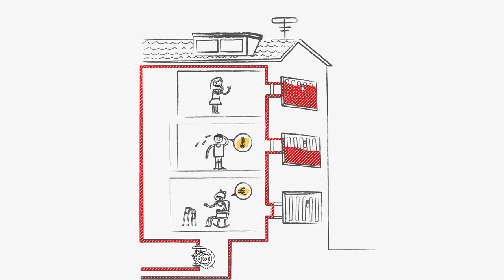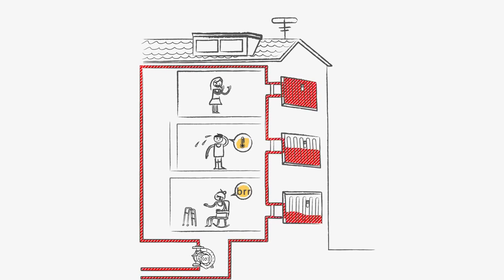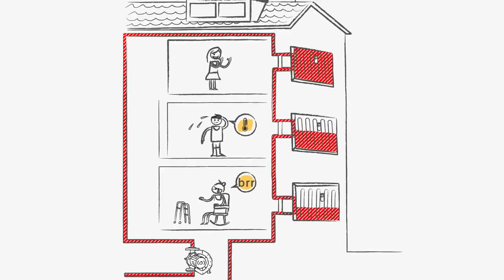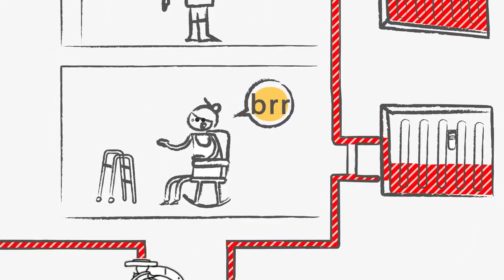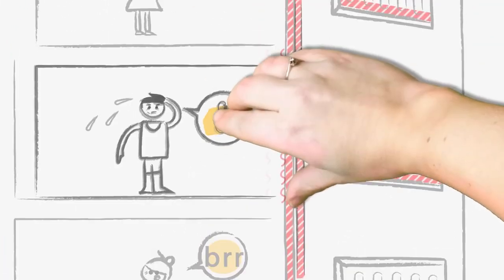Underheating is caused by poor distribution of water flows, a so-called unbalanced system, which results in too little flow in some of the radiators in the apartment.